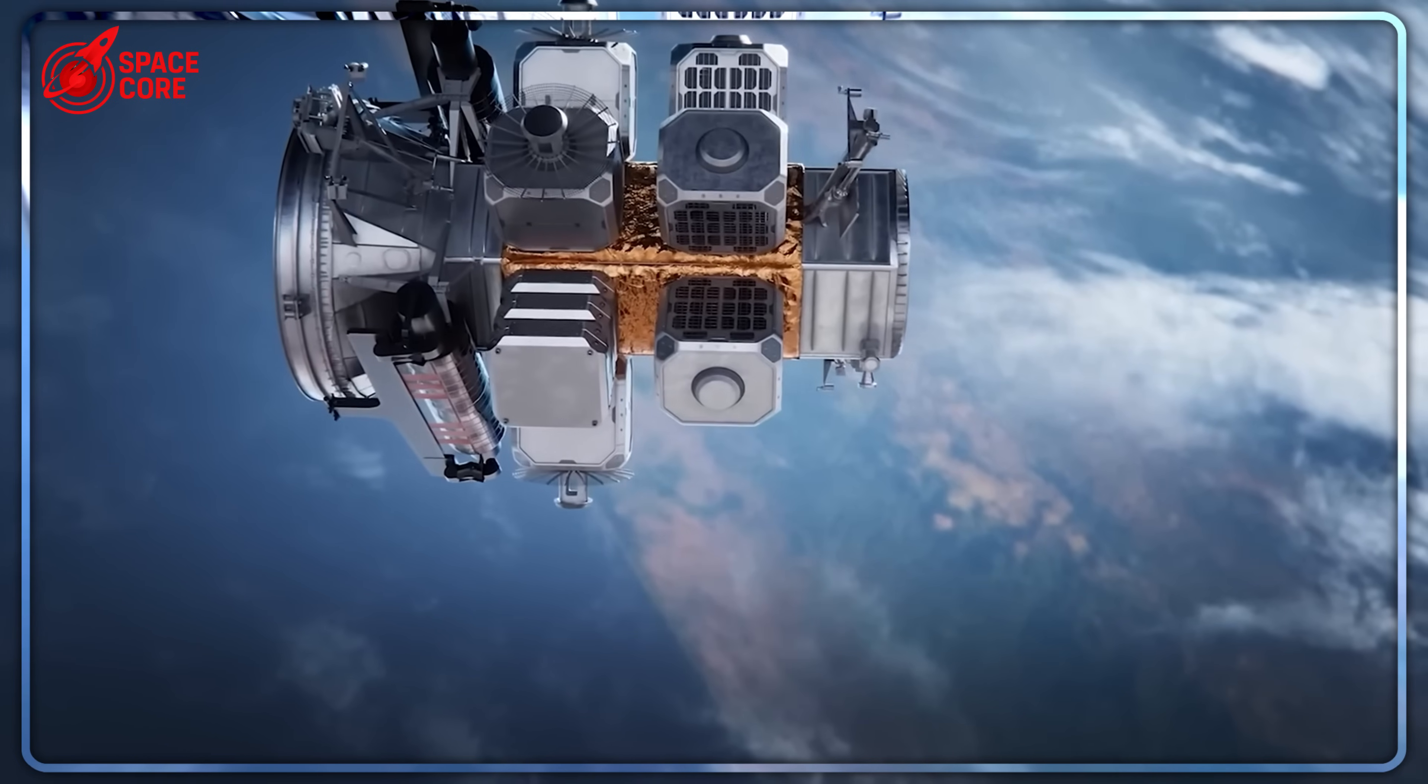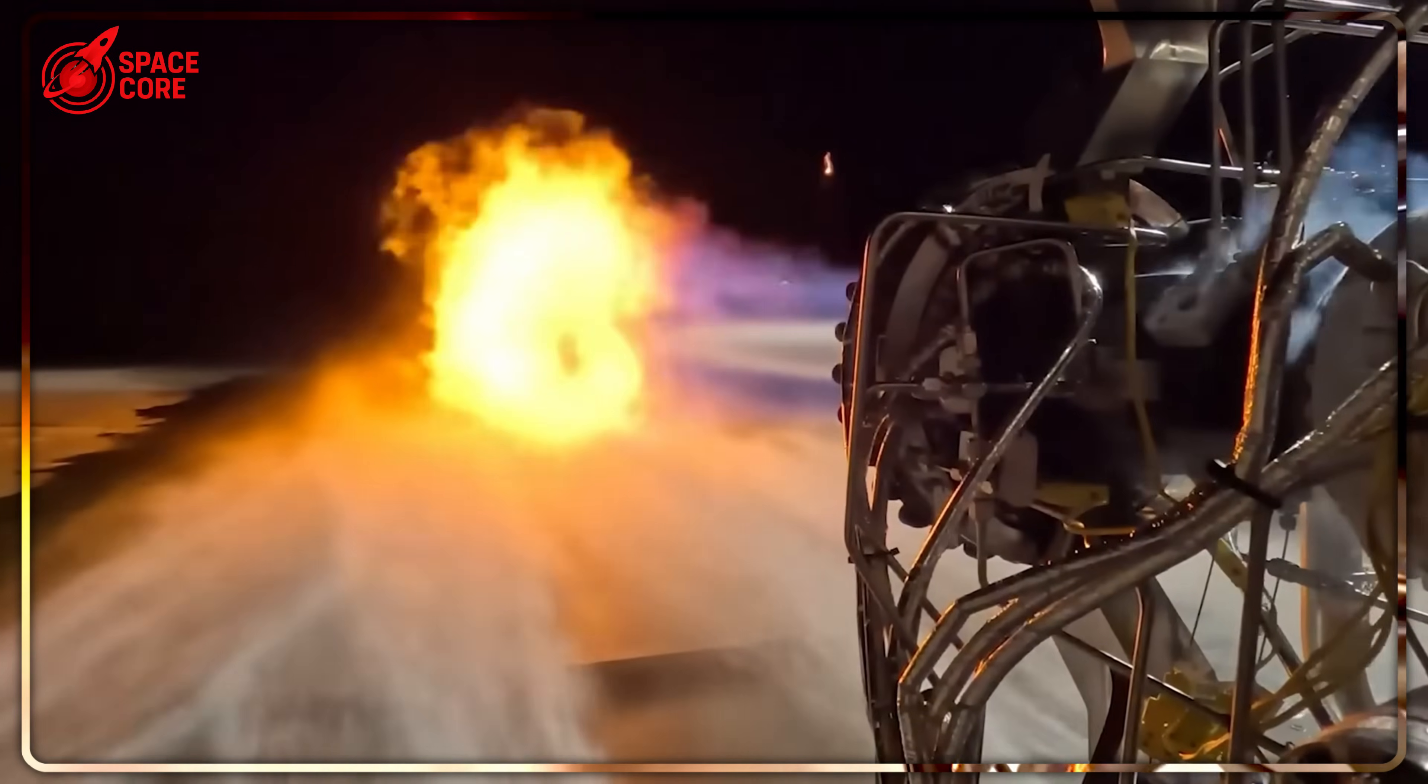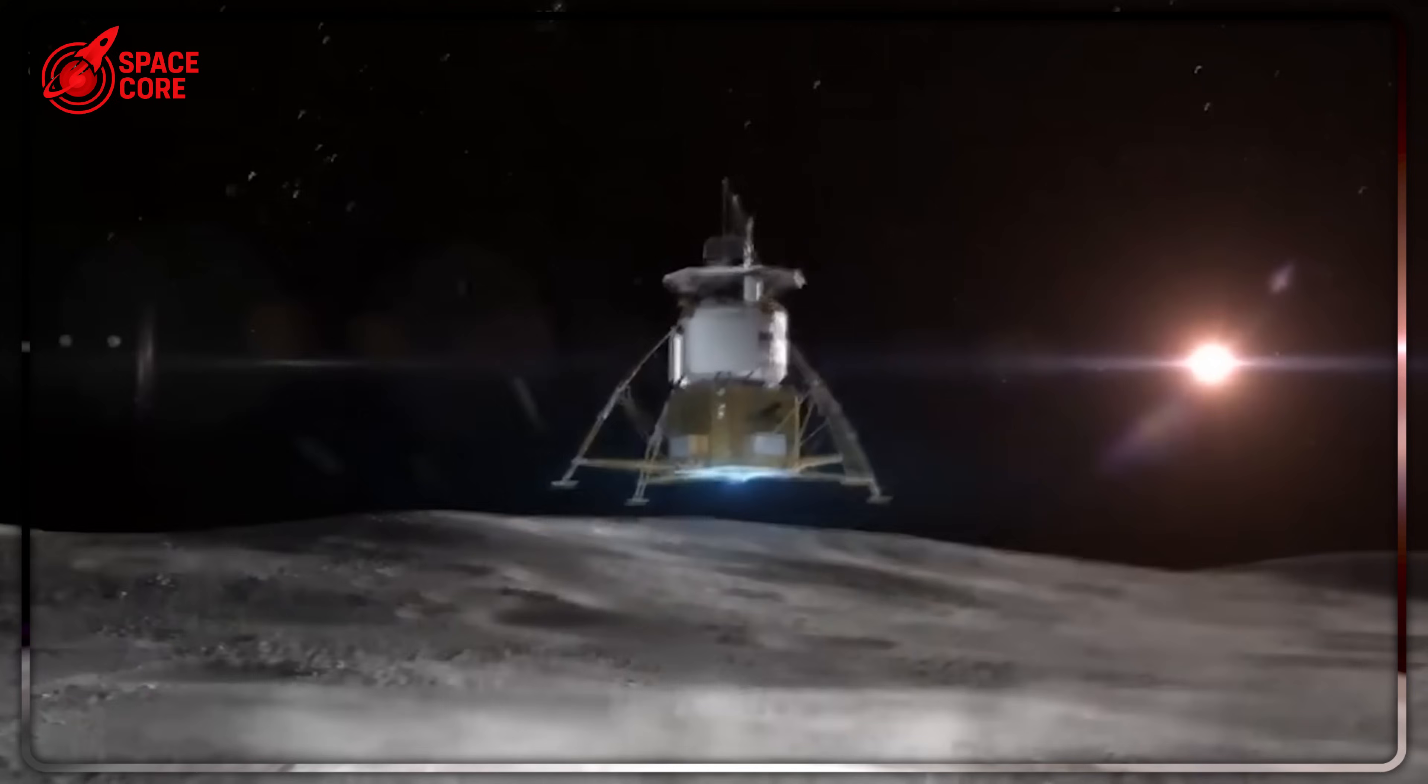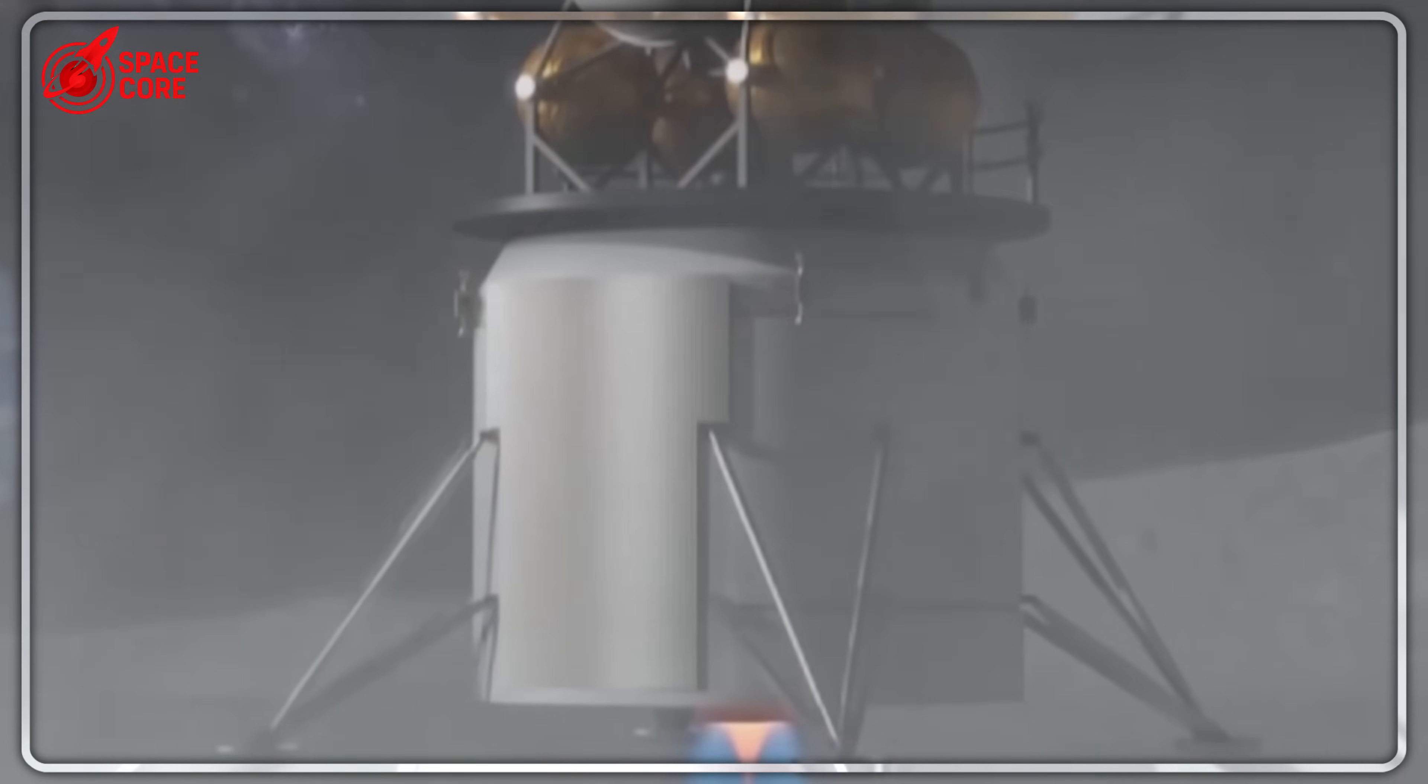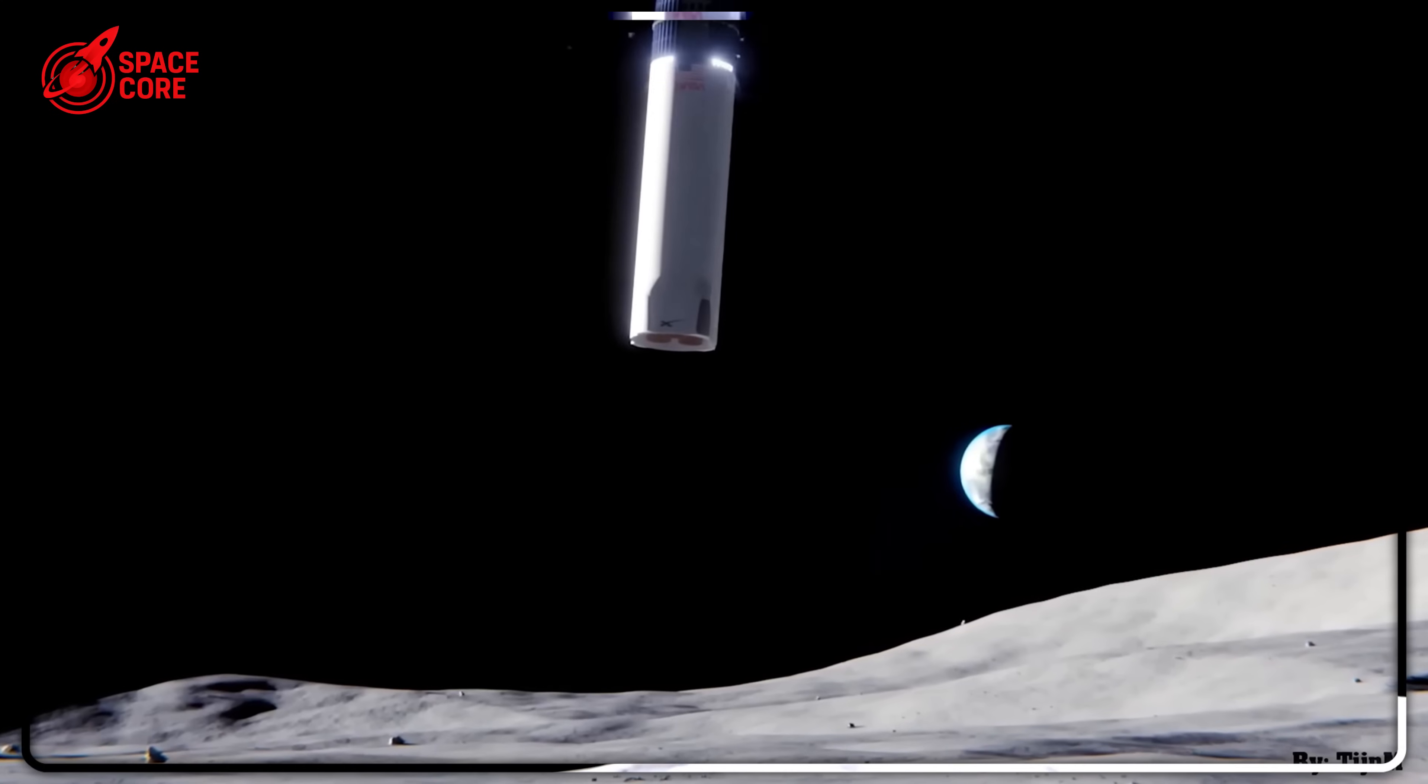SpaceX's Merlin engines burn kerosene. It's dirty, but it's forgiving. You can mess up the temperature by 50 degrees and still get reliable combustion. Blue Origin chose the harder path and discovered they don't have the expertise to walk it. The irony: Blue Origin's engines are supposed to be reusable, but they can't even make them work once, let alone multiple times. Meanwhile, SpaceX is on their fifth flight with some boosters.